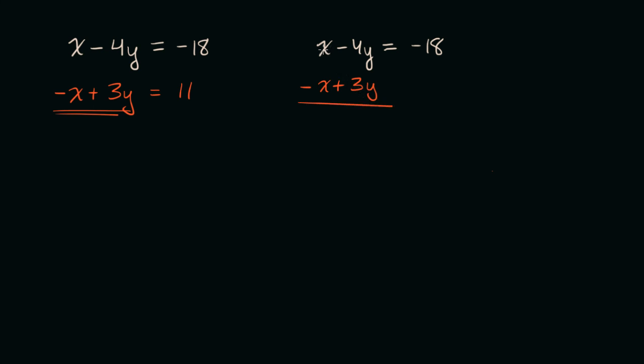So negative x plus 3y. Well, that looks pretty good because an x and a negative x are going to cancel out, and we are going to be left with negative 4y plus 3y. Well, that's just going to be negative y. So by adding the left-hand side of this bottom equation to the left-hand side of the top equation, we were able to cancel out the x's. That was very nice for us.